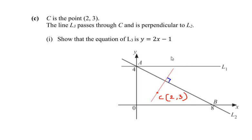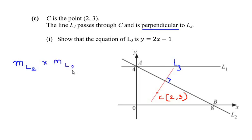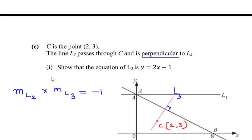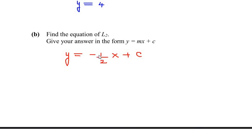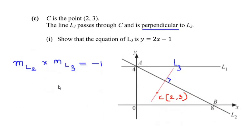Now, if two lines are perpendicular, the condition is that the slope of L2 multiplied by the slope of L3 must equal negative 1. From part B, the slope of line L2 was -½. So substituting: (-½) times the slope of L3 equals -1.